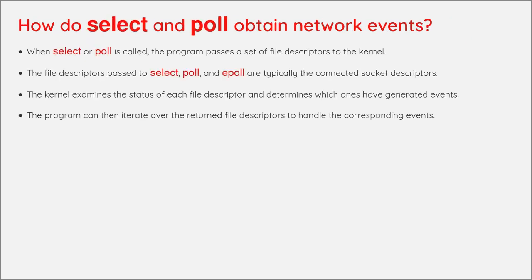How do SELECT and POLL obtain network events? When SELECT or POLL is called, the program passes a set of file descriptors to the kernel. The file descriptors passed to SELECT, POLL, and EPOLL are typically the connected socket descriptors. The kernel examines the status of each file descriptor and determines which ones have generated events. The program can then iterate over the returned file descriptors to handle the corresponding events.